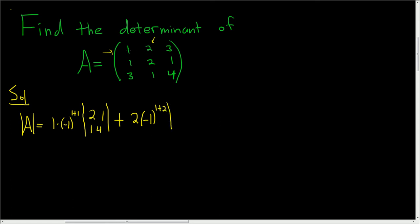And again, you cross out the corresponding row and column. So gone, gone, gone, gone, gone. So you get 1, 3, 1, 4. So 1, 3, 1, 4. And then plus.